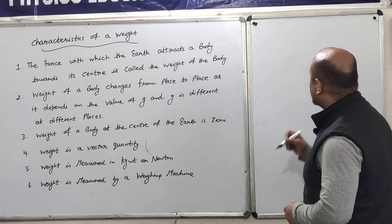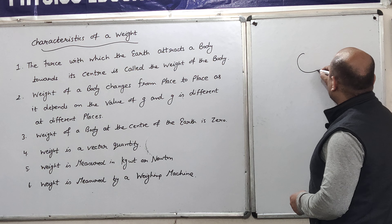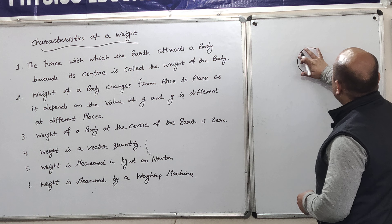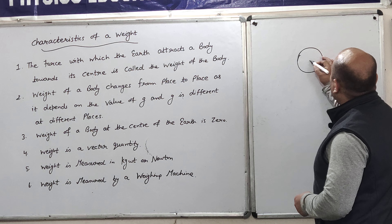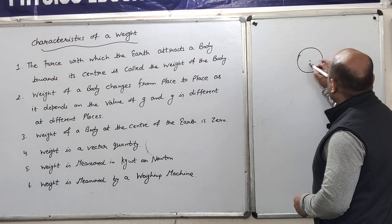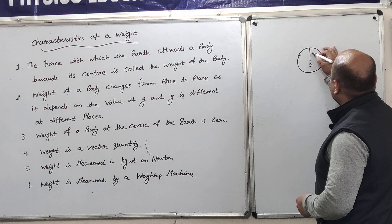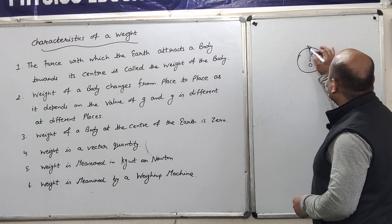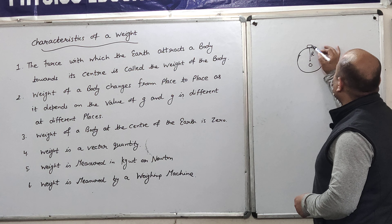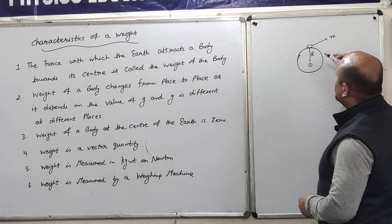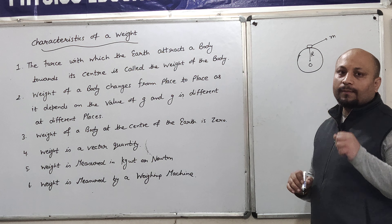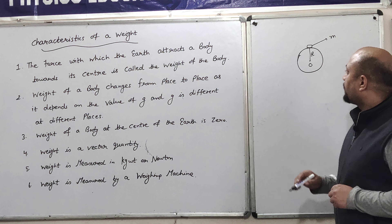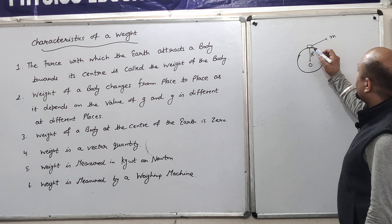Suppose this is the body and suppose this is the earth, having a center point O and radius R. The body has a mass M. Mass, as I have already told you, is the quantity of matter contained in the body.